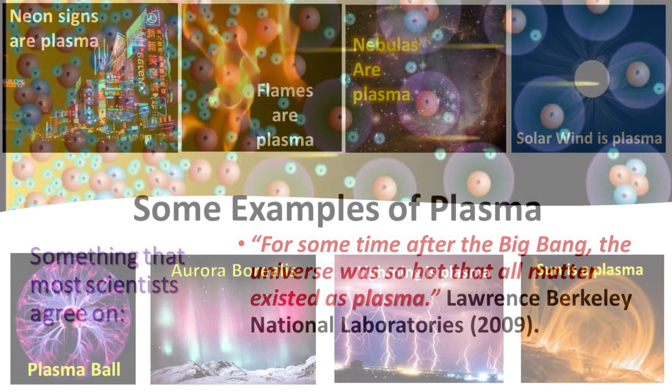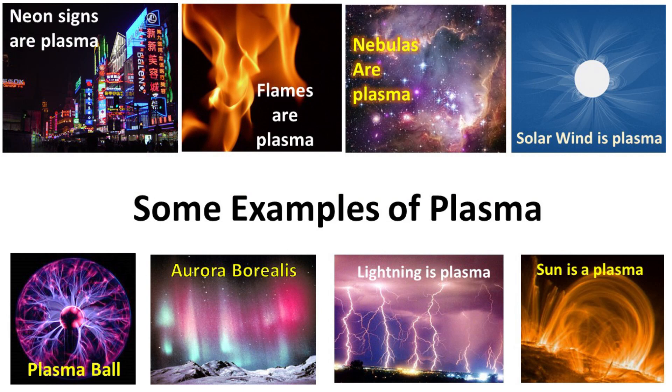We move on to the next panel on the plasma chart. Here are some examples of plasma. Neon signs are glowing plasma. So are flames. The nebulas we see out in space are matter in a plasma state. The solar wind, the stream of charged particles from the sun, which fills the entire solar system, is plasma. The aurora borealis is glowing plasma, while lightning and the sun's surface are both high-energy or arc-mode plasmas.